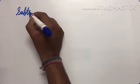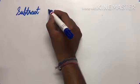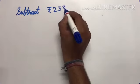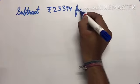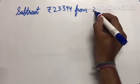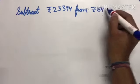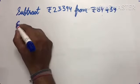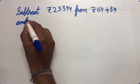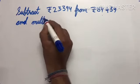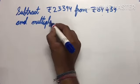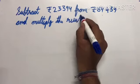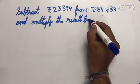Now suppose the question is: subtract rupees 23,394 from rupees 84,434, and multiply the result by 25.